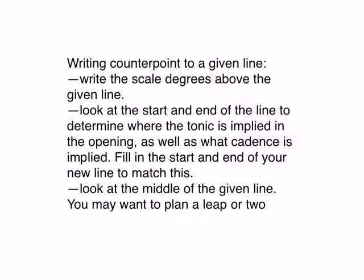So now let's talk about how to write a counterpoint to a given line. First you want to write the scale degrees above the given line so that you know what's going to fit with it in the key. Then you look at the start and the end of the line to determine where the tonic is implied in the opening as well as what the cadence is. Fill in the start and end of your new line to match this. Let me show you an example.